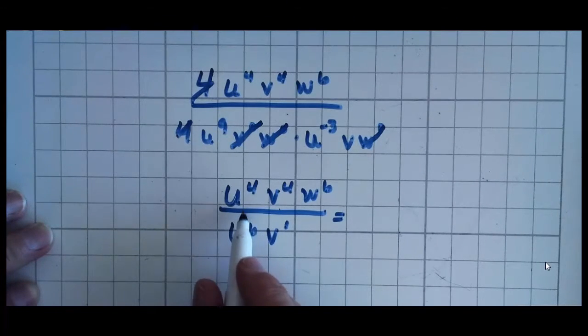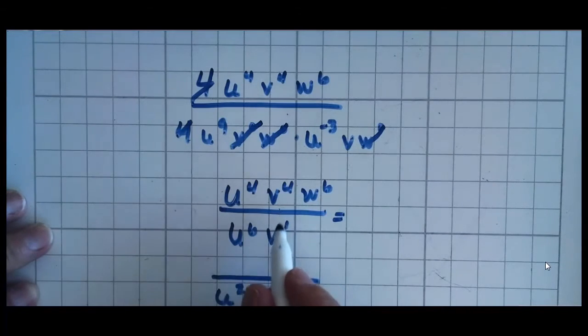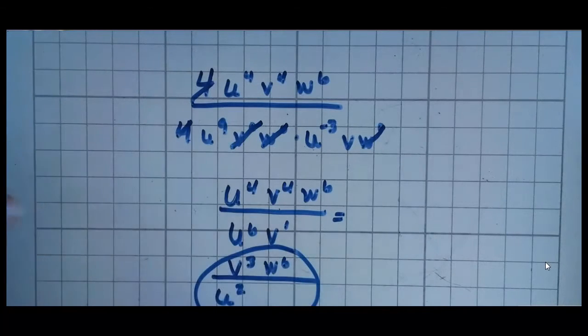Or, you can say 4 minus 6 is 2, but because 6 is a larger number, I'm going to put it on the same side of the fraction as the larger number. v to the 4th, v to the 1st, 4 minus 1 is 3, 4 is bigger, so I'm going to put it up here, and then w to the 6th. And that is your answer.